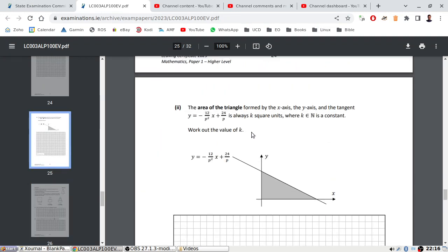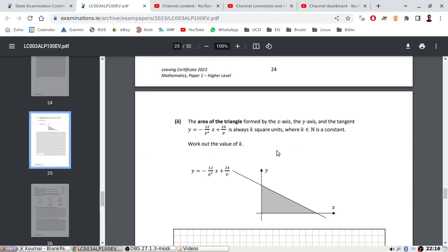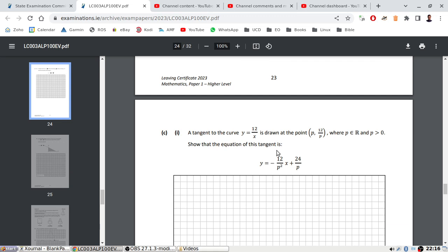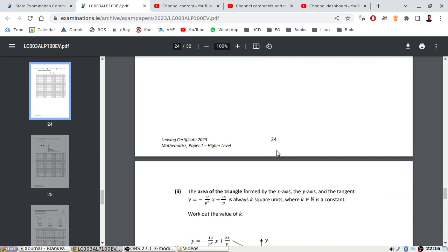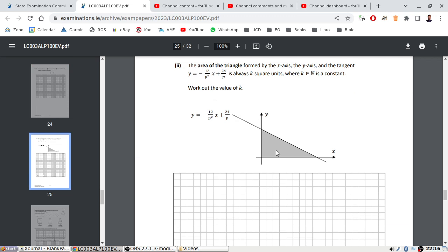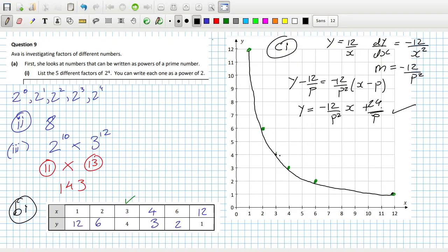Nearly finished. Super question: the area of the triangle formed by the x-axis and the y-axis and the tangent line is always k square units, where k is constant. Work out the value of k. Interesting. What do we know about p? P is real and positive. The area of the triangle formed by the tangent is k square units where k is a natural number. Okay, so imagine there's some tangent line here.